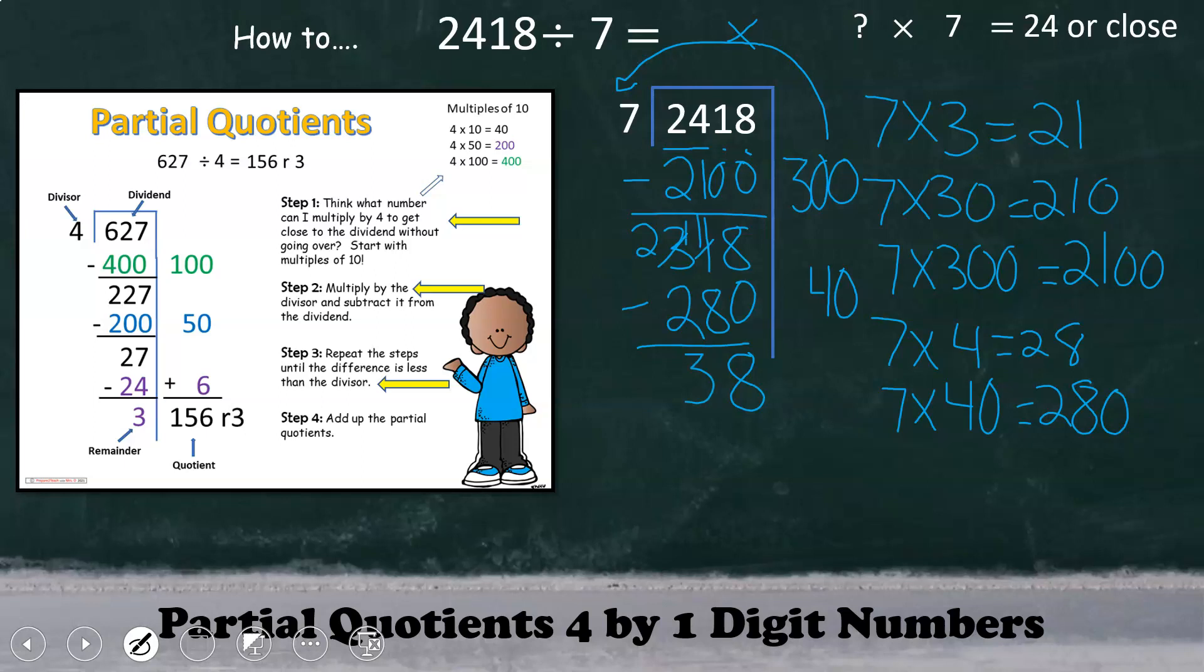And since 38 is greater than our divisor, we must continue to divide and think, what factor times 7 can get me closest to 38? The multiplication fact, 7 times 5, can get us the closest, giving us a product of 35.